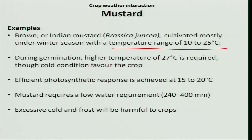Germination requires a slightly higher temperature of about 27 degrees Celsius, though it is a cold season crop. The temperature requirement is determined by the oil content of the seeds; therefore, it requires a slightly higher temperature even though the seed size is small. During the vegetative stage, the crop can tolerate a temperature range of 15 to 20 degrees Celsius. During this phase, excessive cold and frost would adversely affect the crop.